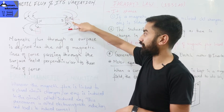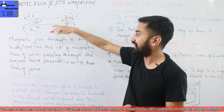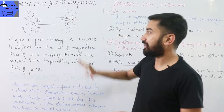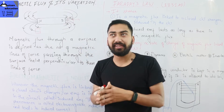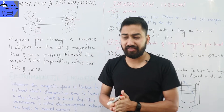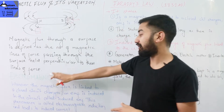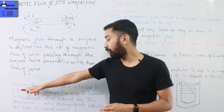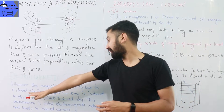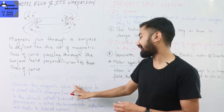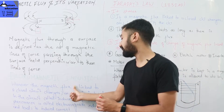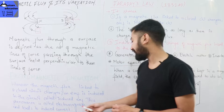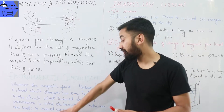This is the surface, and through this surface there are magnetic forces passing perpendicularly. The magnetic flux is linked to the circuit. Whenever the magnetic flux linked to a closed circuit changes, an EMF is induced in the circuit — called induced EMF. This phenomenon is called electromagnetic induction.